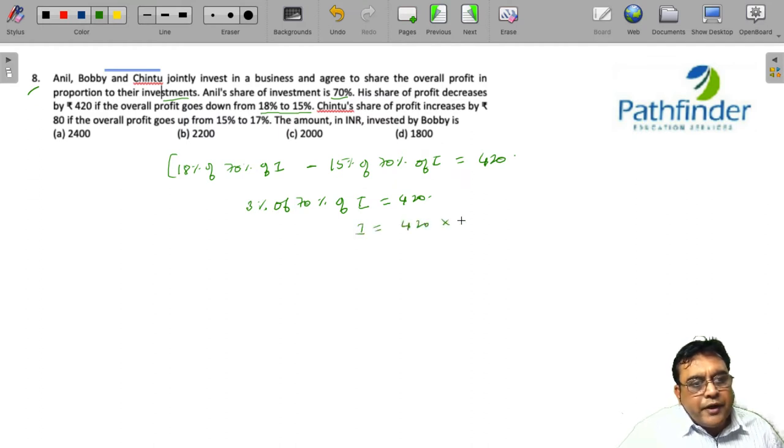So, 420 into 100, into 100 divided by 21 or 210. Which means your investment is 20,000 rupees.